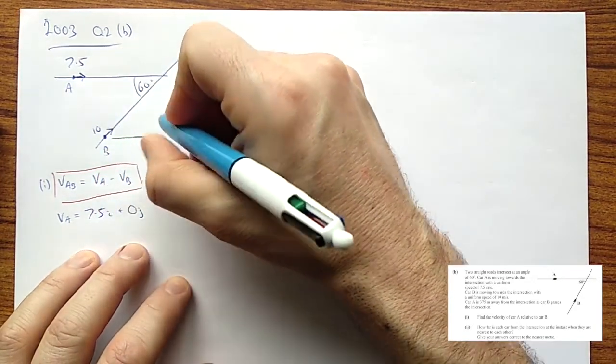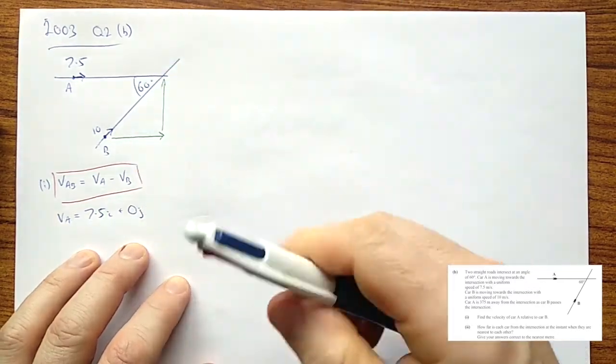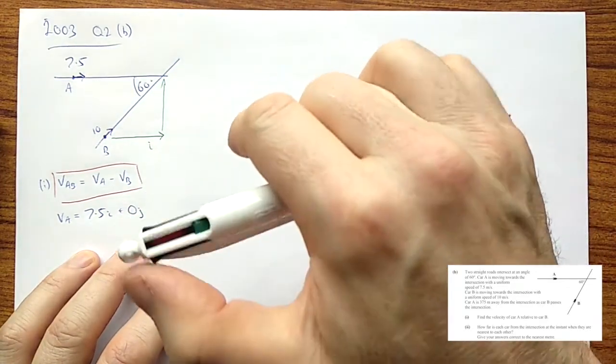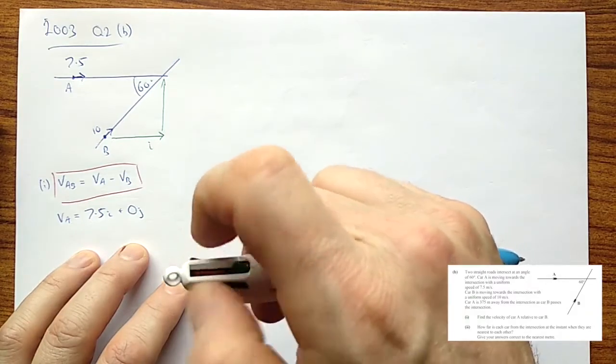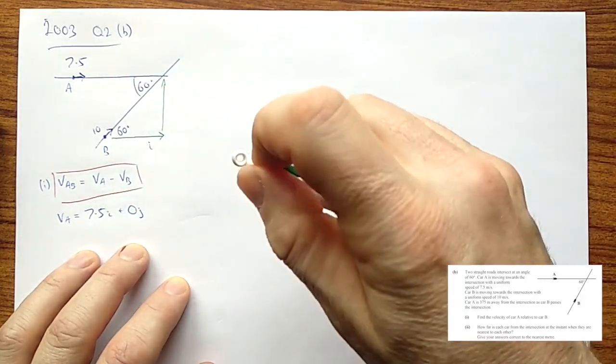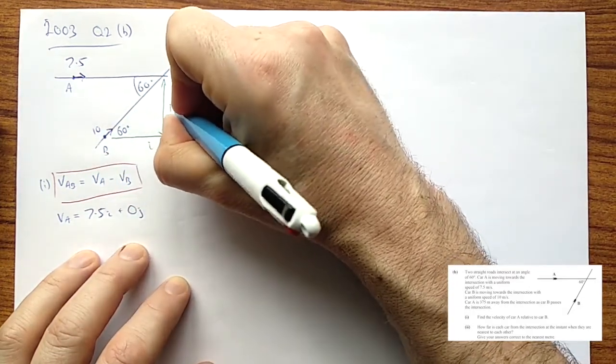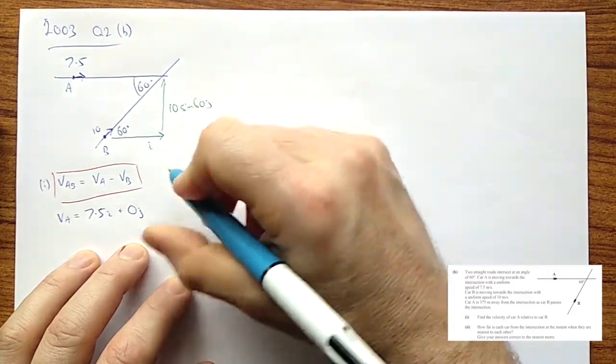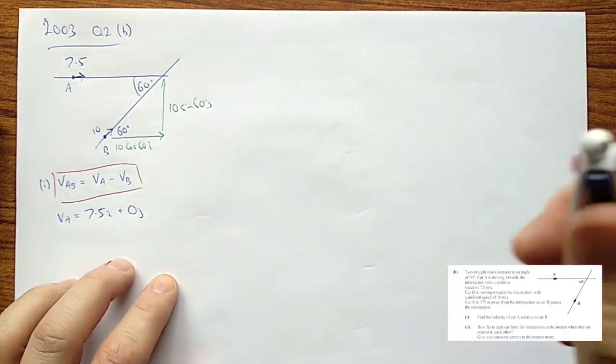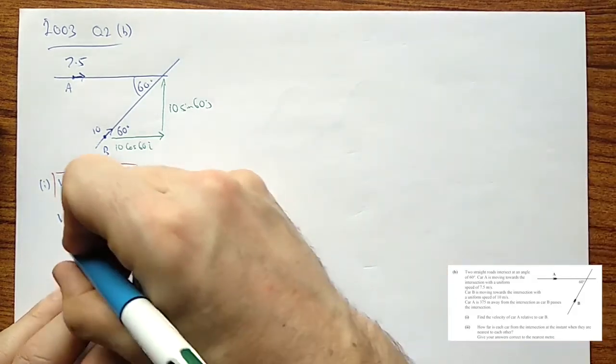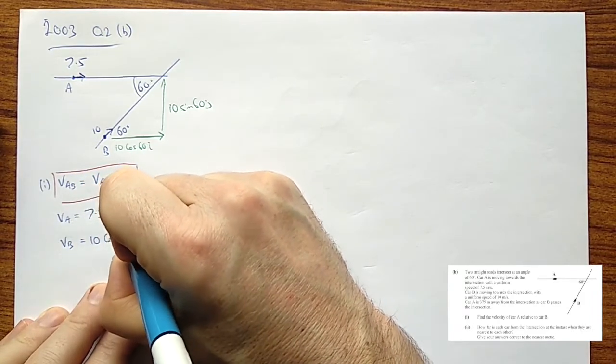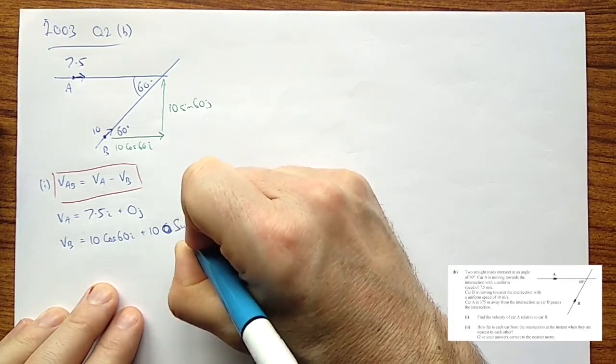Well, the velocity of A is 7.5i with nothing in the j direction. And the velocity of B we need to do a little bit more work for. Let's look at it this way. If we were to try and split it up into i's and j's, we have our i component here and our j component over here. Well, let's look at what we know. We know that this is 60 degrees. So, this speed over here is going to be 10 sin 60 in the j direction and 10 cos 60 in the i direction.